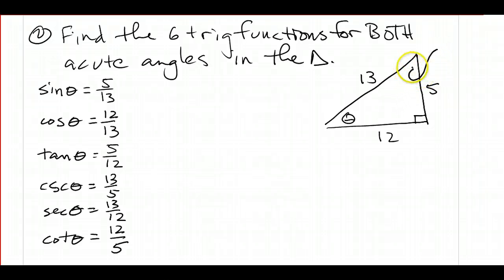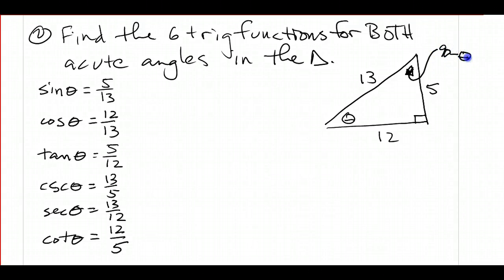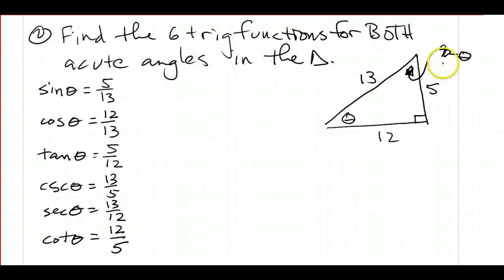So what I need to do is find the six trig functions for this other angle here. If this angle is theta, this has to be what's left over from 90, so it has to be 90 minus theta. If you add up theta plus 90 minus theta, the thetas cancel out and you end up with just 90. Two angles that add up to 90 are complements, so these two acute angles in any right triangle are going to be complementary — keep that in mind.